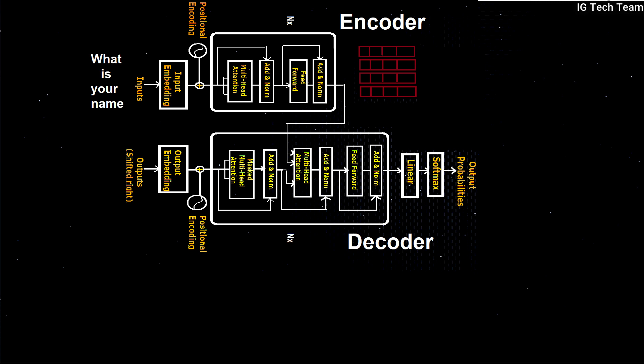If two words are similar, the numbers in the vector will be close to each other. In the decoder, the output from the encoder and the translated Hindi language come in, and it tries to generate the next word from the previous word one at a time, until the end of that sentence is reached. Thus, Transformer is based on encoder and decoder.